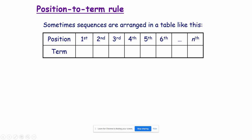This just represents any number. So before when I said the 100th term, we could put 100 in there and work it out. We could put 200th, 150th, 97th — whatever we want. The whole point is this is the general way of doing things.